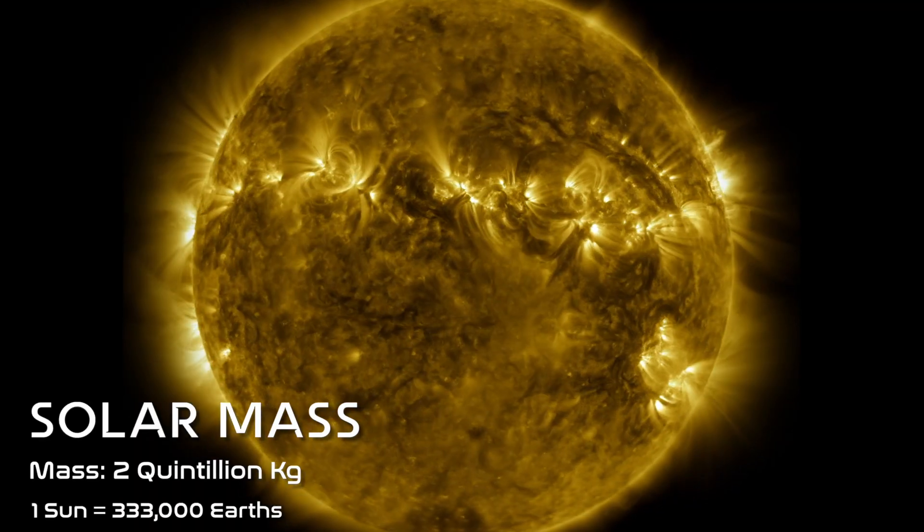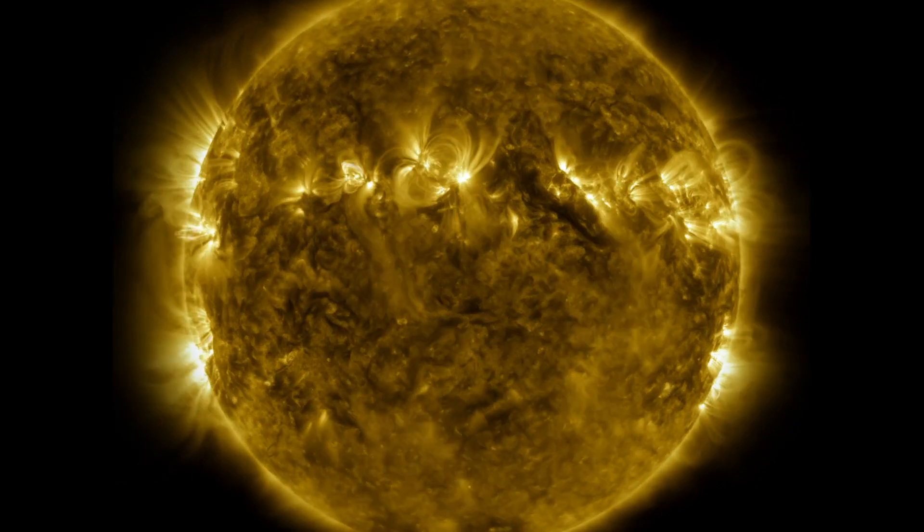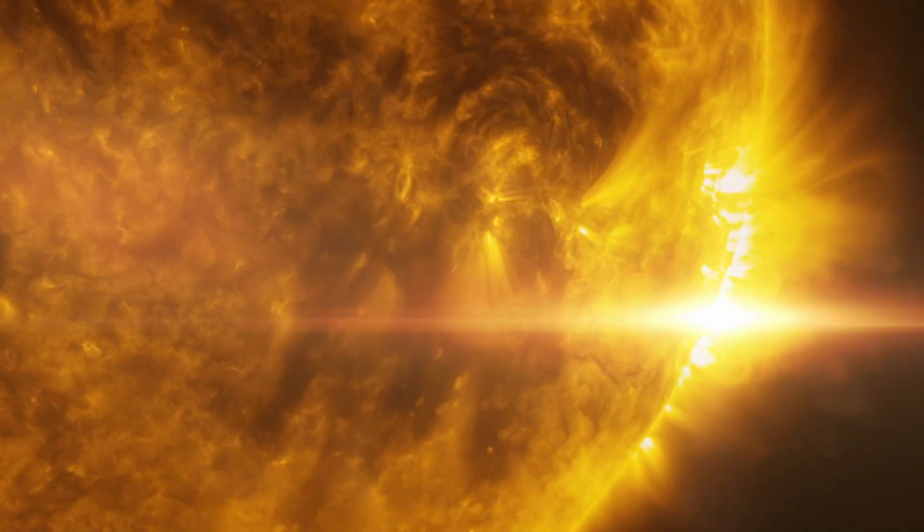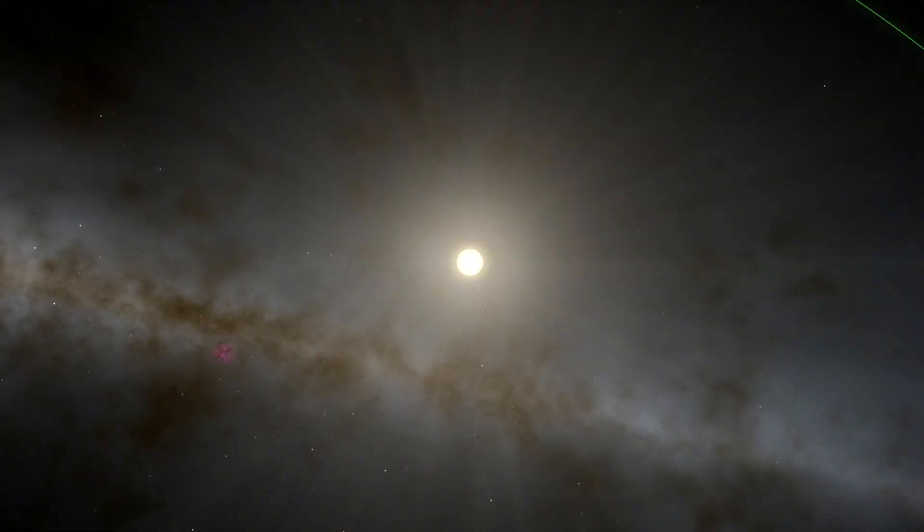According to calculations, one solar mass, or the mass of our Sun, is around 330,000 times the mass of the Earth, so it isn't expected that our average star could actually go supernova at all.